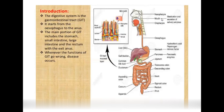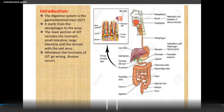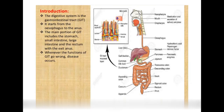The gastrointestinal tract (GIT) starts from the mouth. The mouth connects to the pharynx (nasopharynx, oropharynx, laryngopharynx), then the esophagus, then the stomach where HCl is produced. The small intestine has three parts: duodenum, jejunum, and ileum. The large intestine includes the cecum, appendix, ascending colon, transverse colon, descending colon, sigmoid colon, rectum, and anus.